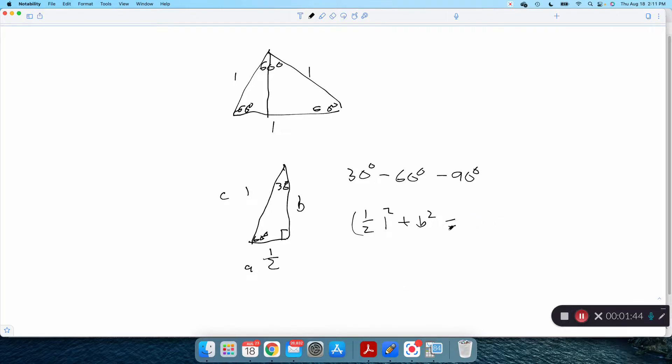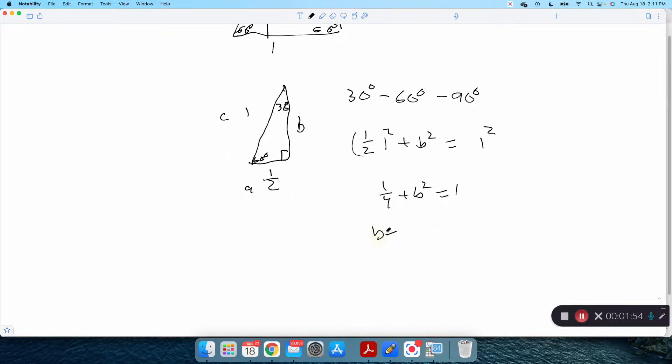And we know C is 1. So one fourth plus B squared equals 1. So B squared will be 1 minus one fourth, three fourths. We take the square root of both sides, because I don't want B squared, I want B. B will be the square root of three fourths. And I can do square root of the top over square root of the bottom. Square root of 3 is root 3. Square root of 4 is 2.